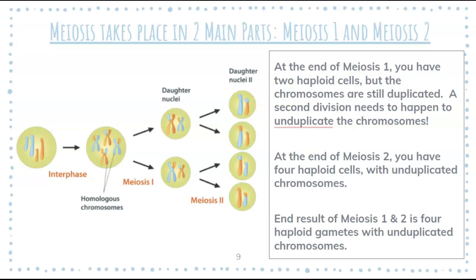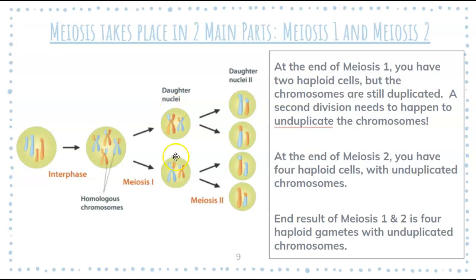Meiosis is going to take place in two main parts: meiosis one and meiosis two. At the end of meiosis one, if you look at this diagram — here's interphase, so your cell gets duplicated — we already have haploid cells here. Why? Because we started with four chromosomes and now we have two, so that's half the DNA. We end up with haploid cells, but notice they're still duplicated — we still have our little X's. So we go through a second division to unduplicate everything, and at the end we have four haploid gametes with unduplicated chromosomes.